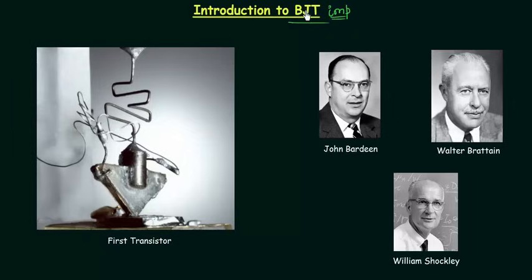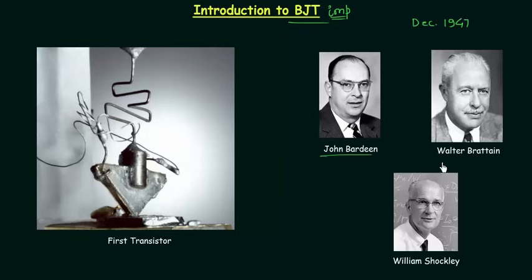The inventors of BJT received Nobel Prize in Physics, which shows how important this topic is. The transistor was invented in December 1947 by the team of John Bardeen, Walter Brattain, and William Shockley at Bell Labs, USA.